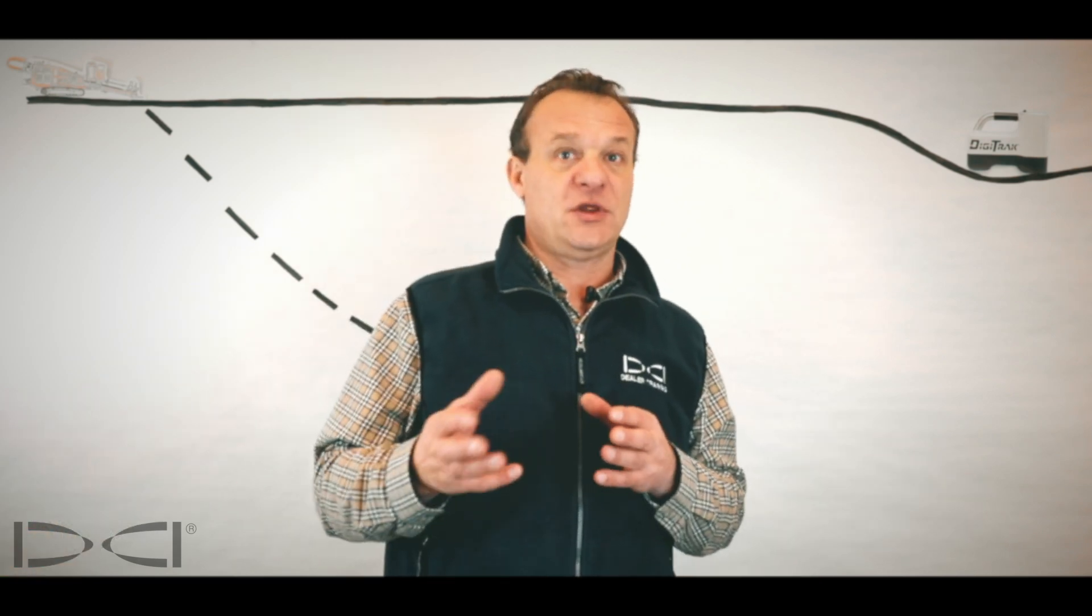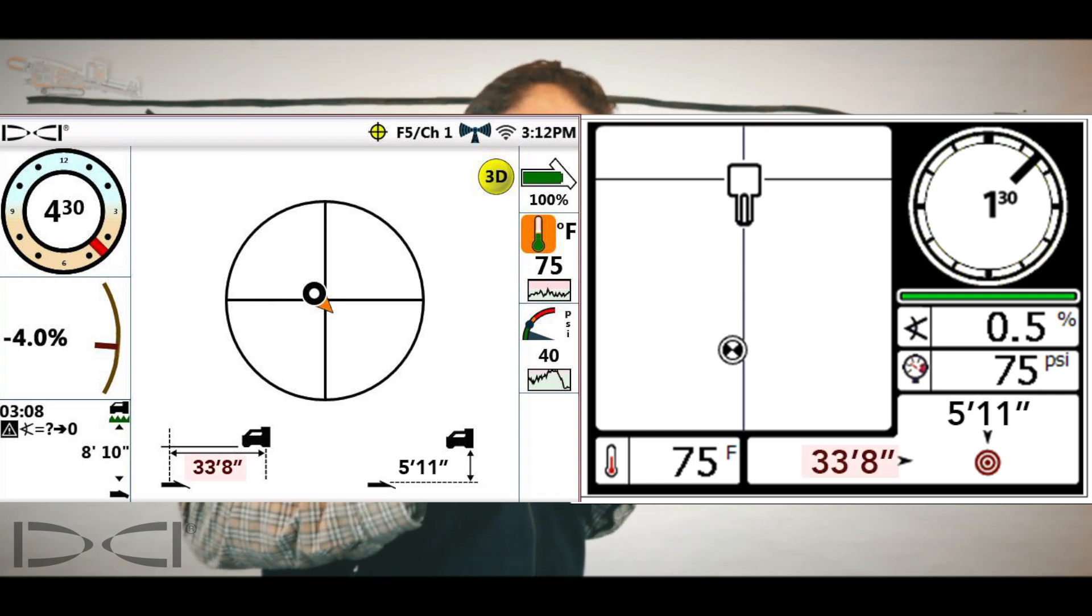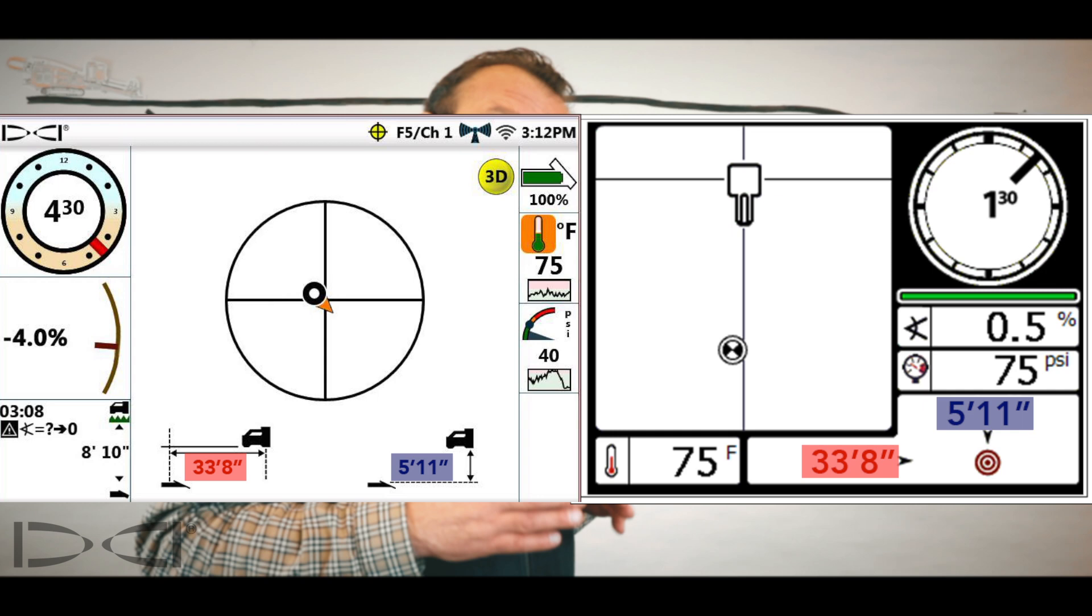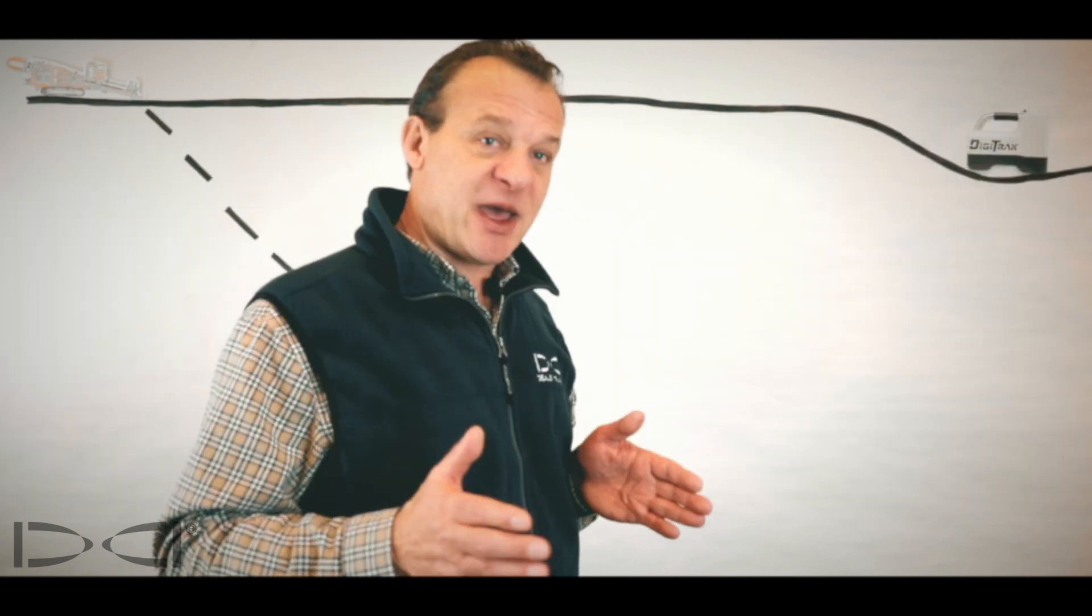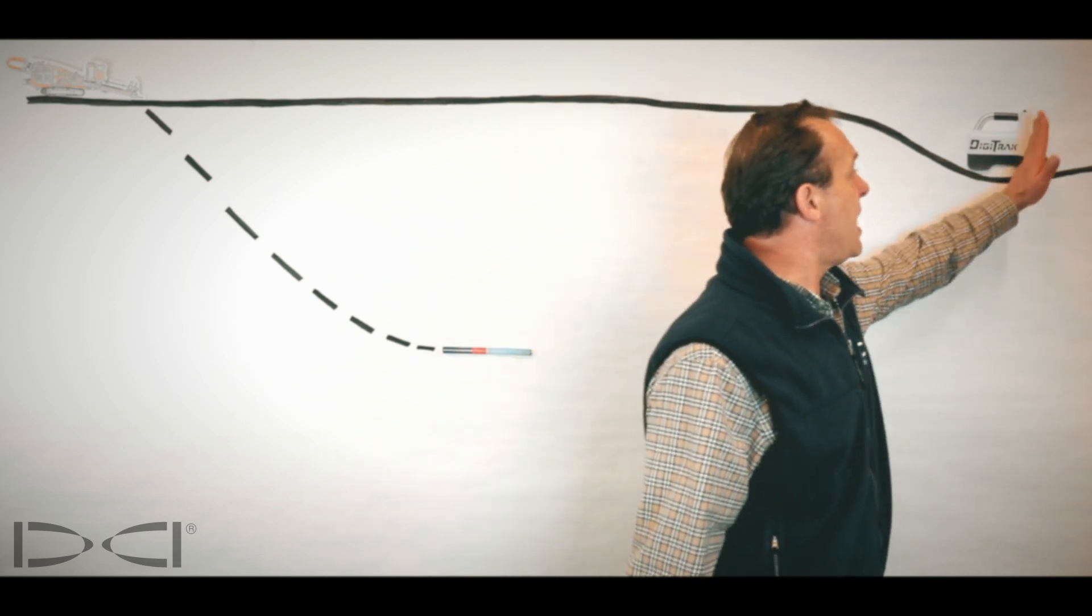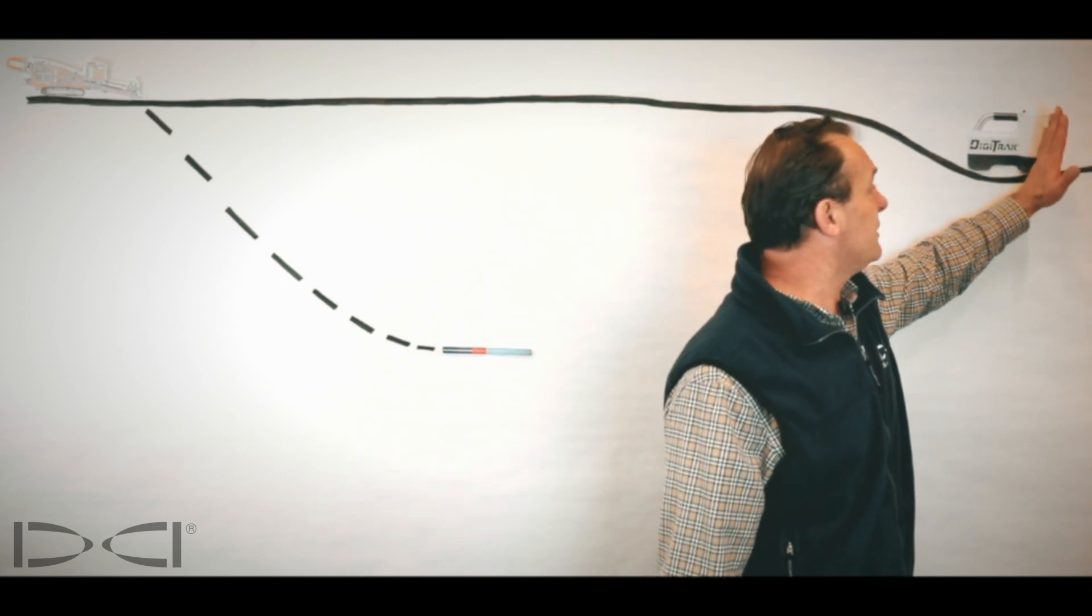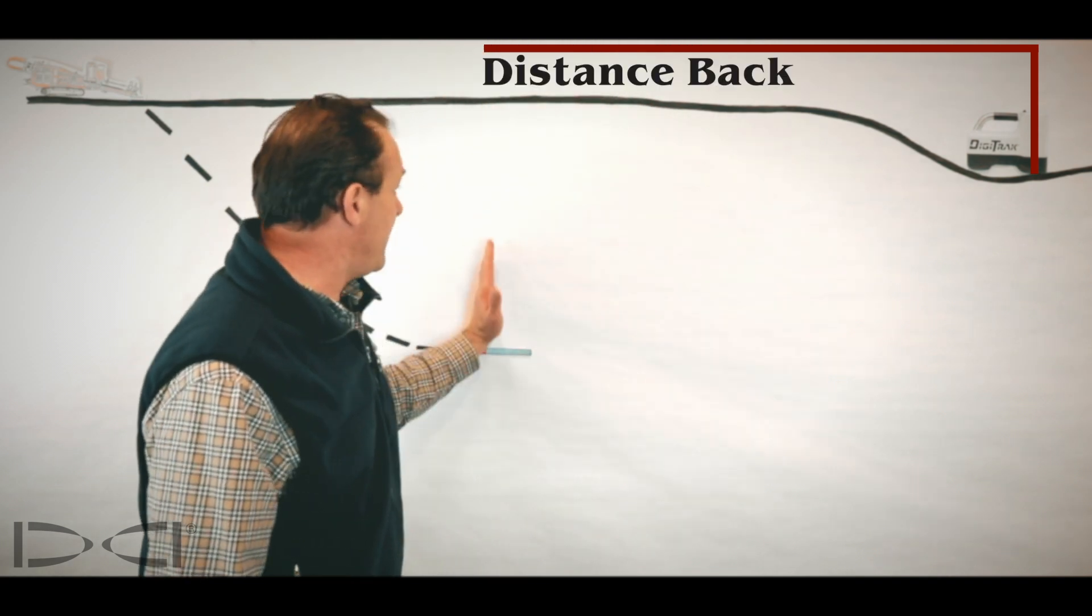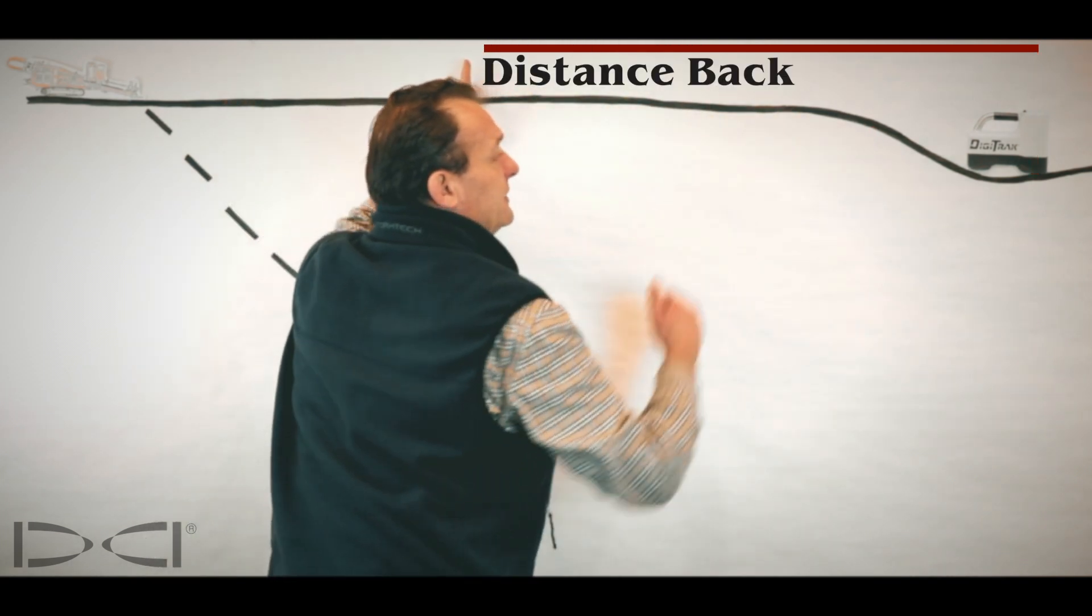The other value that we see, the other change we'll see in both those displays, is we get a distance back value and we get a distance below value. So the distance back is quite simple. That's merely the distance to the transmitter behind the antenna array of the receiver. That's the front portion of the receiver. So this is the distance back we're talking about, that span right there.